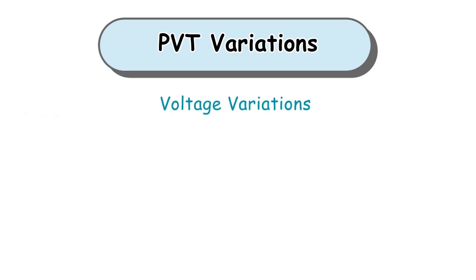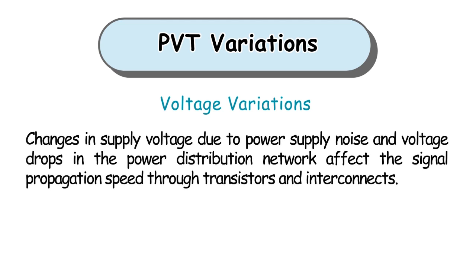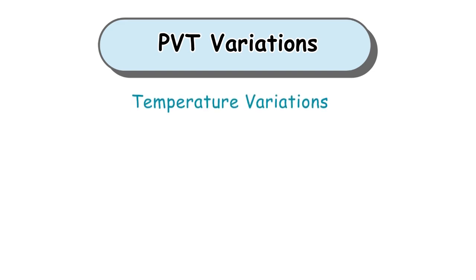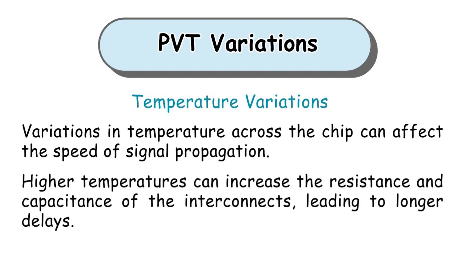Second, voltage variations. Changes in supply voltage due to power supply noise and voltage drops in the power distribution network affect the signal propagation speed through transistors and interconnects. Third, temperature variations. Variations in temperature across the chip can affect the speed of signal propagation. Higher temperatures can increase the resistance and capacitance of the interconnects, leading to longer delays.